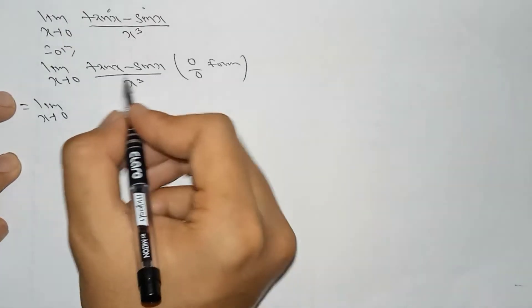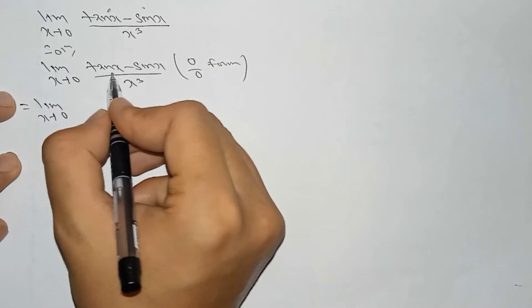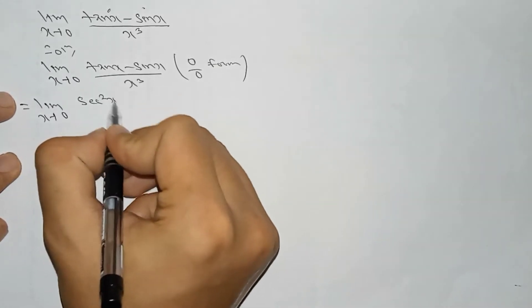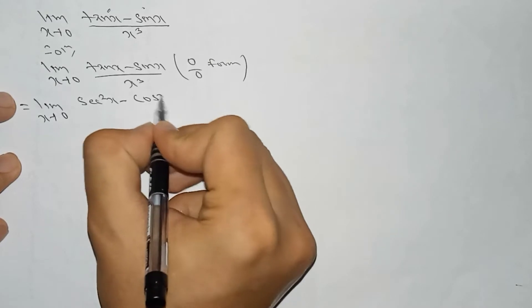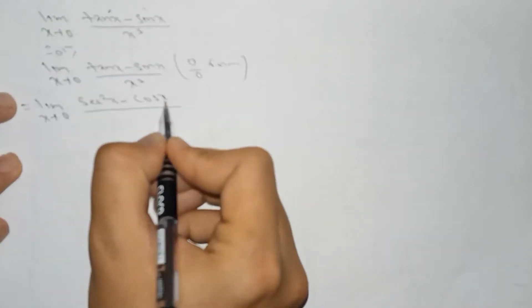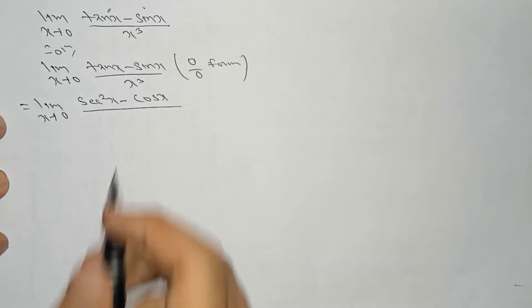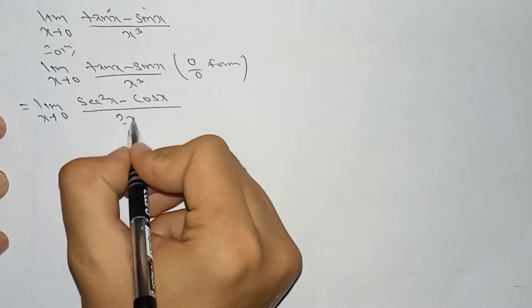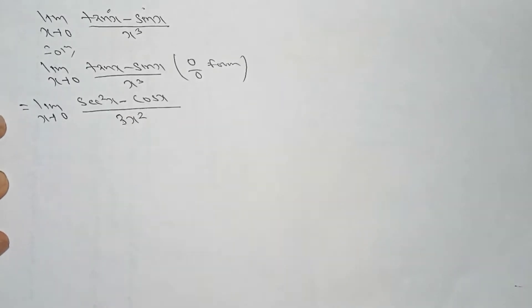So we have to differentiate this term. The differentiation of tan x is sec square x, and the differentiation of sin x is cos x. In the denominator, the differentiation of x cube is 3x square.